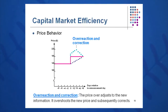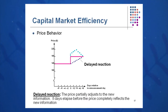You might see an overreaction and correction — perhaps what Greenspan once called irrational exuberance. So we might have an overreaction and a correction back to what we would call the efficient market level. Or we may have a delayed reaction where the price slowly adjusts to that efficient market level.